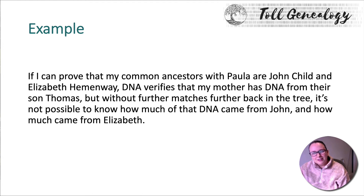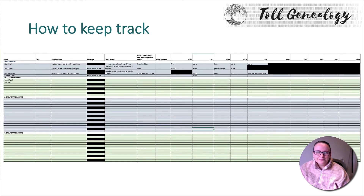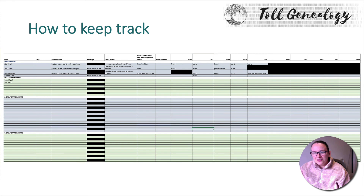To put it more succinctly: if I can prove that my common ancestors with Paula are John Child and Elizabeth Hemingway, DNA verifies that my mother has DNA from their son Thomas — but without further matches further back in the tree, it's not possible to know how much of that DNA came from John and how much came from Elizabeth. Those are the basic methods for tree verification. Source records are always the primary method; DNA is the biological backup evidence we now have access to that we didn't have 10 or 20 years ago.